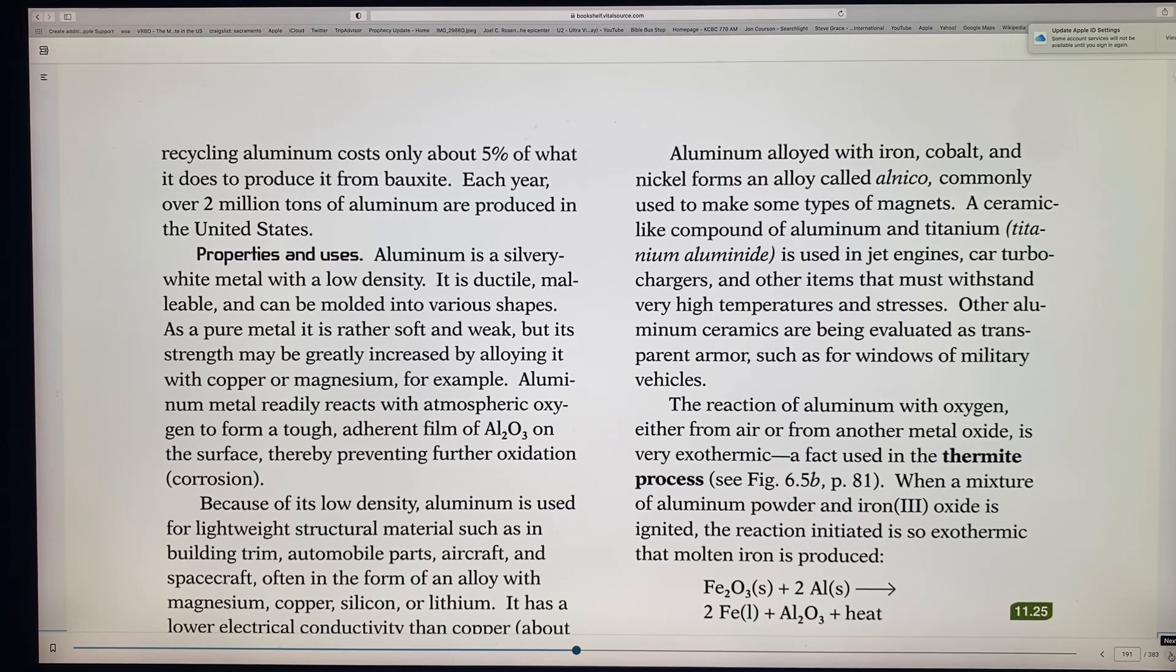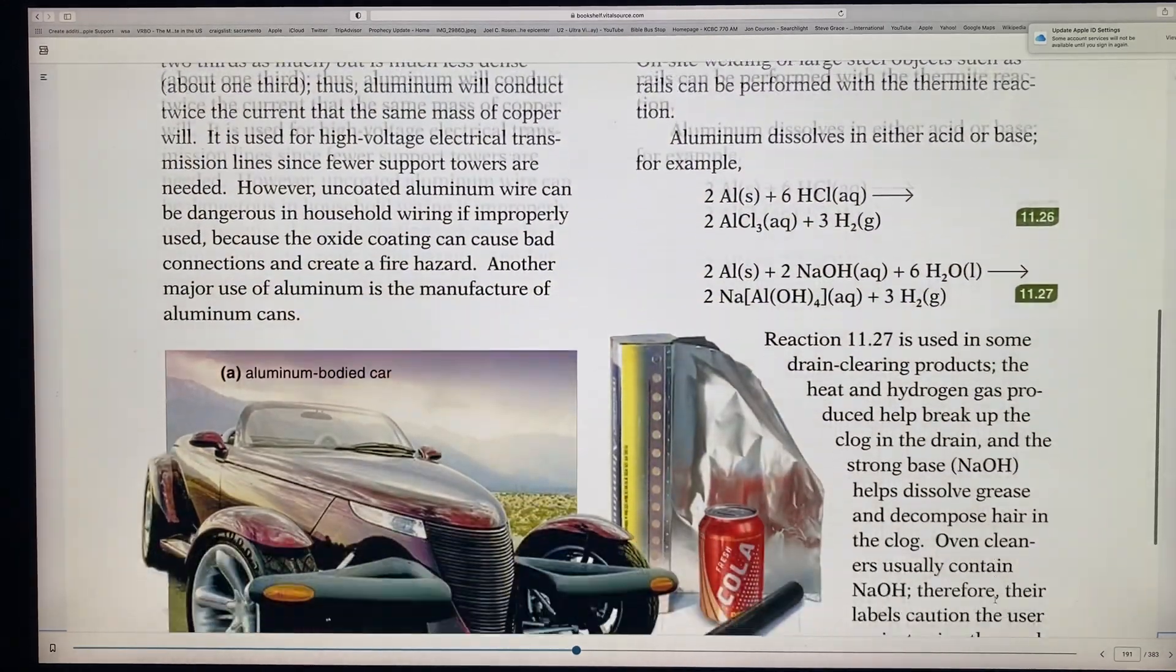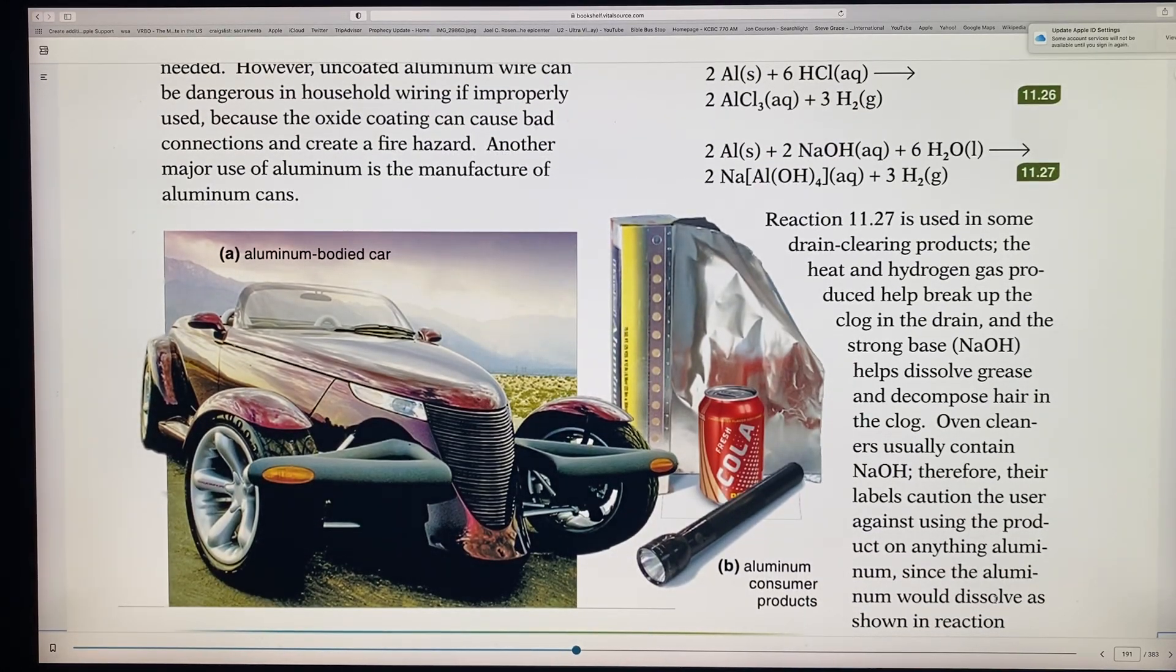And it's used because of the low density. It can be used in building trims of buildings, auto parts, aircraft, spacecraft. With the alloy mixing magnesium and copper and silicon and lithium, it produces a lot of different types of metal. And it's two thirds less conductive than copper, but it seems like we use aluminum more than copper. Why would we use aluminum more than copper? Well, because aluminum is set so lighter, so much lighter than copper that it actually conducts two times the current as copper does. So if you were to take copper and use copper wiring, would be fine, but aluminum could be used because it actually conducts twice as much.